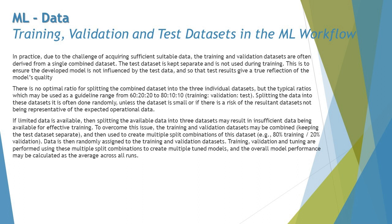Splitting the data is often done randomly, unless the dataset is small or there is a risk of the resultant dataset not being representative of the expected operational data. If limited data is available, splitting into three datasets may result in insufficient data for effective training, which can hurt the learnability of the ML model. To overcome this, the training and validation datasets may be combined — keeping the test dataset separate — and then used to create multiple split combinations.